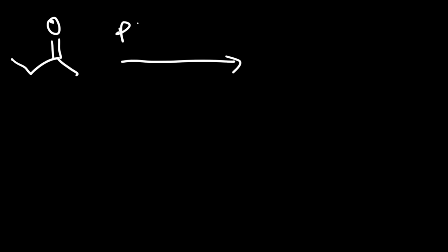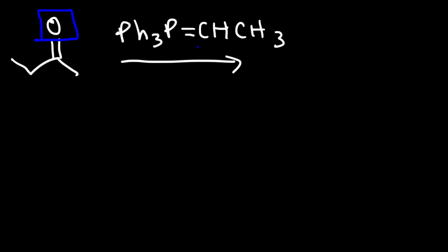Let's try another example. We have a ketone and we wish to react it with an ilid. Go ahead and predict the major product for this reaction. What we need to do is replace the oxygen with this group, so the product will look like this.